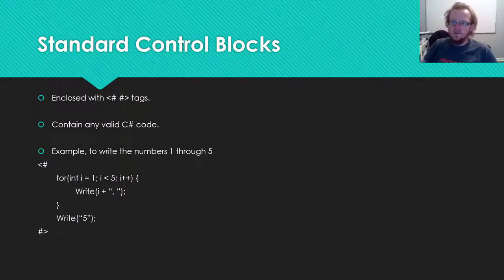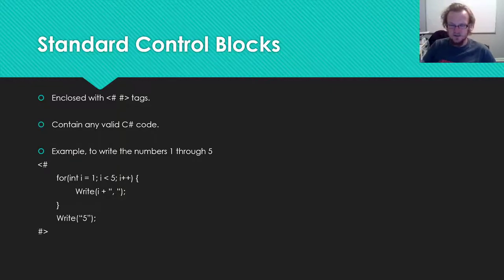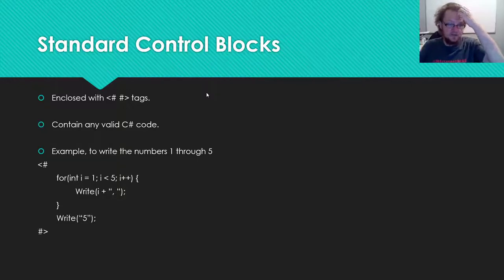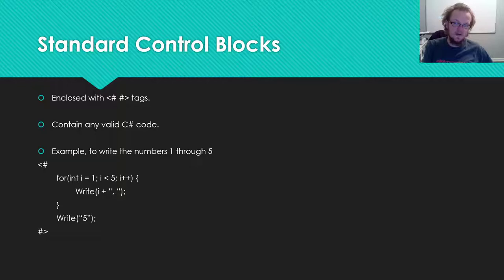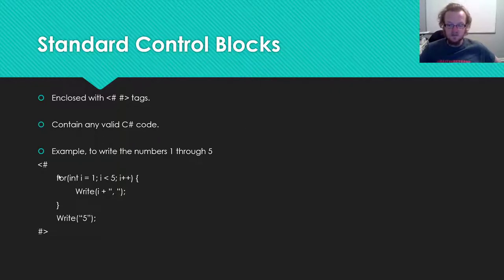A standard control block is enclosed with these special tags — a triangle brace with a pound sign. These can enclose any valid C# code. For example, if we wanted to write to the text file behind our template the numbers one through five, we could easily put a for loop inside these control block tags and use the write function to write that list of integers out.